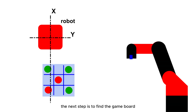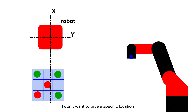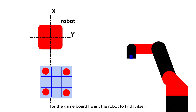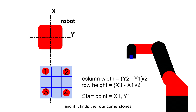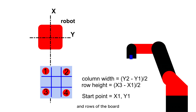The next step is to find the game board. I don't want to give a specific location for the game board — I want the robot to find it itself. I did this by placing the four cornerstones. The robot will then scan the area, and if it finds the four cornerstones, it can calculate the location of the columns and rows of the board.